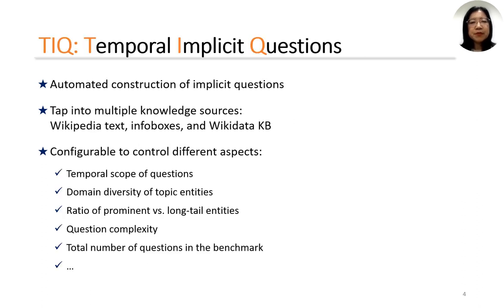Therefore, we propose a method for automated construction of implicit questions. Our method taps into multiple sources: Wikipedia text and infobox, and the Wikidata KB. The method is configurable to control different aspects including temporal scope of questions, the diversity of topic entities, ratio of prominent versus long-tail entities, and so on.